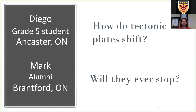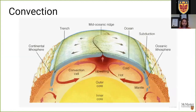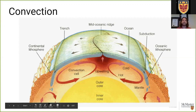Diego from Ancaster asked how tectonic plates shift, and Mark from Brantford asked if that will ever stop. The answer to how they move is a process known as convection — the idea of warm fluid rising away from its heat source, cooling, and sinking back down. A lava lamp is a great example of convection in action. As heat comes up from below, it hits the crust and moves laterally, pushing the plates along like a conveyor belt. Then it cools, sinks, reheats at the core, and rises again.